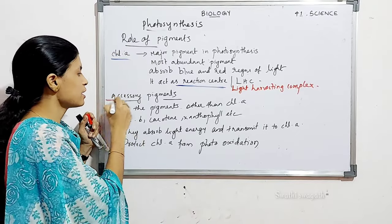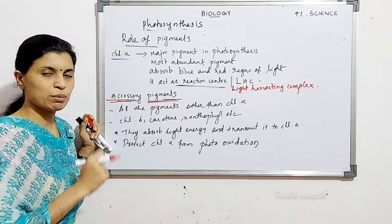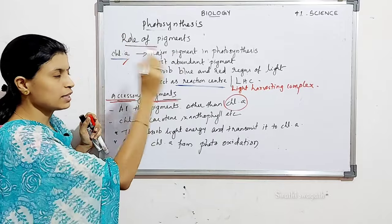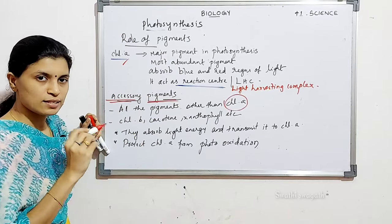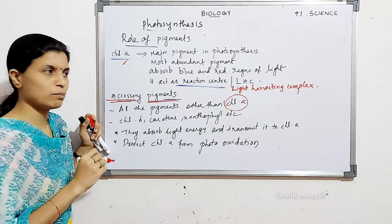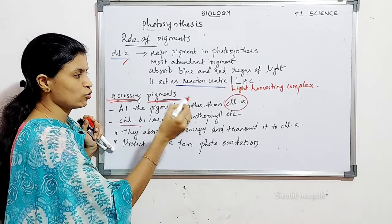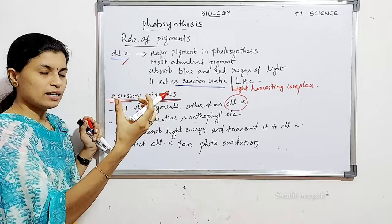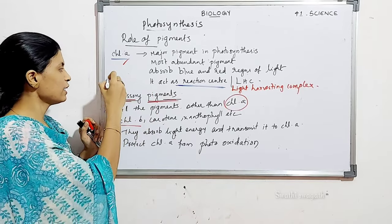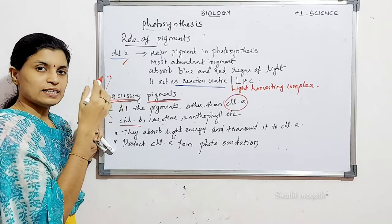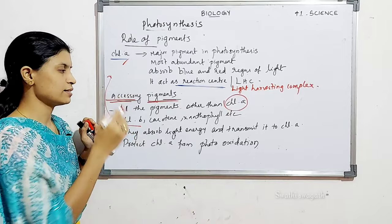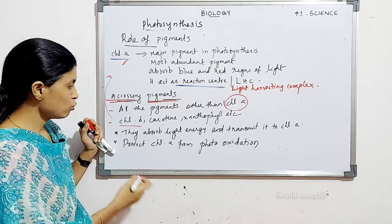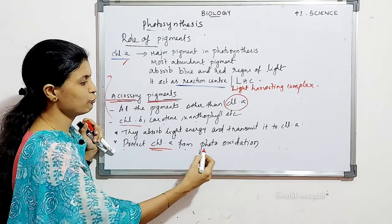All pigments other than chlorophyll A are called accessory pigments — for example, chlorophyll B, carotene, and xanthophyll. They are called accessory pigments because they absorb light energy and transmit it to chlorophyll A. They also protect chlorophyll A from photo-oxidation — that is, damage caused by direct intense sunlight.